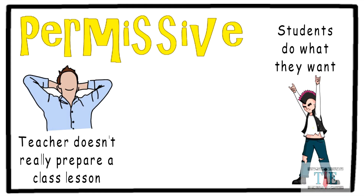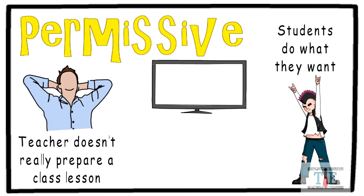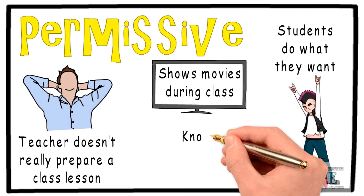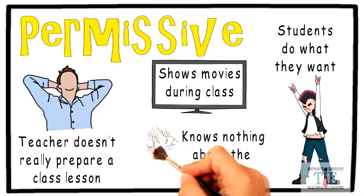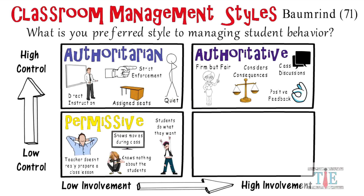Permissive teachers often show movies during class time simply because they do not feel like teaching. The permissive teacher doesn't know much about his students, doesn't care about the kids, and teacher-student relationships are of little importance to him. Permissive teachers don't notice suffering students.